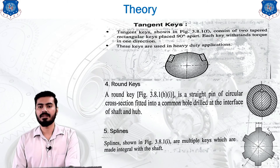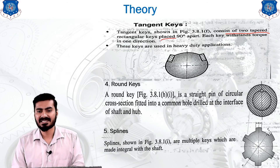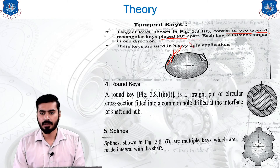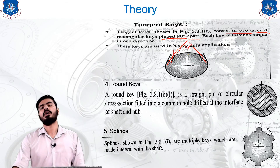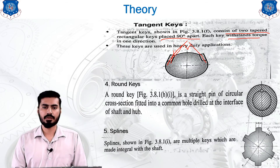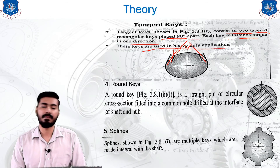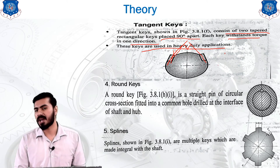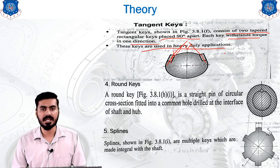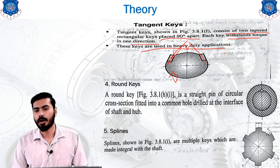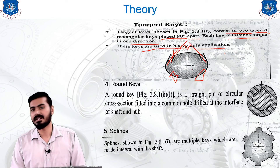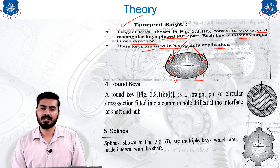Another type of key is the tangent key, consisting of two tapered rectangular keys placed 90 degrees apart. The axes of the two keys are at 90 degrees to each other. Each key withstands torque in one direction, and tangent keys are used in heavy duty applications. If more power needs to be transmitted, a second key can be added on the opposite side of the shaft to improve power transmitting capacity.